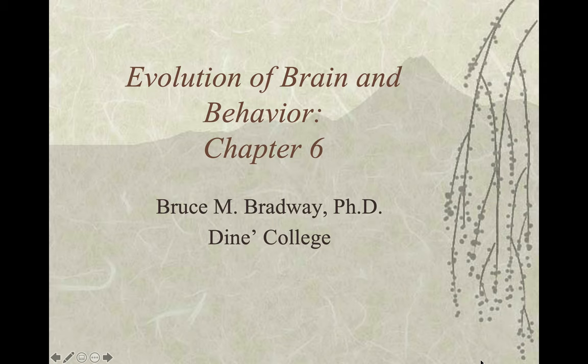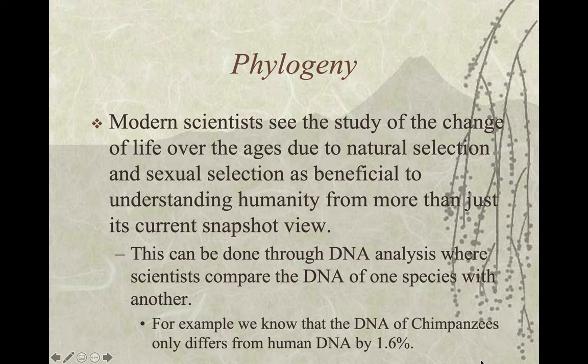Evolution of the brain and behavior. Modern scientists see the study of change of life over the ages due to natural selection and sexual selection as beneficial to understanding humanity from more than just its current snapshot view. This can be done through DNA analysis, where scientists compare the DNA of one species with another. We know that the DNA of chimpanzees only differs from human DNA by 1.6%, which means that 98.4% of chimpanzee DNA is identical to humans.